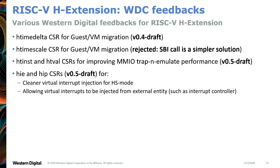A quick summary of the feedback we have given so far: We proposed a time delta CSR for guest migration, which got merged in the 0.4 draft. We also proposed time scaling for migration, but it was rejected as it was too hard for hardware implementors — the simpler solution is to go with an SBI call instead. Then there is the HTVAL CSR which was our feedback for improving MMI trap performance to avoid unprivileged accesses, and this got merged in the 0.5 draft. We also suggested separate CSRs for injecting virtual interrupts — previously everything went through the VSIP CSR. This suggestion was for cleaner virtual interrupt injection and to allow in future interrupt controllers to directly inject interrupts to the guest or VM. This also got merged in the 0.5 draft.